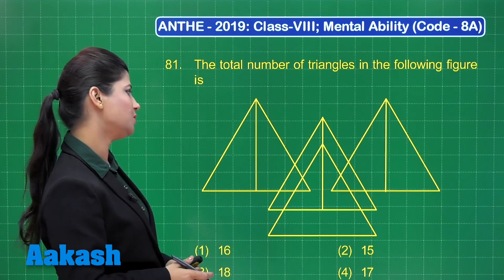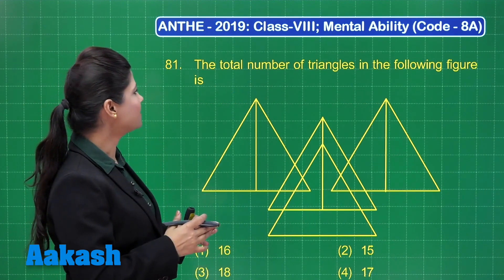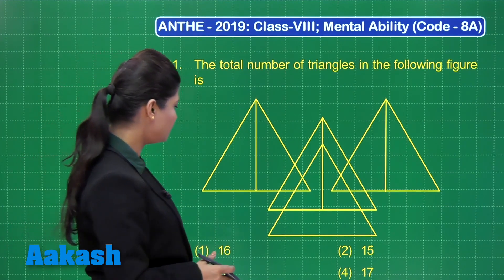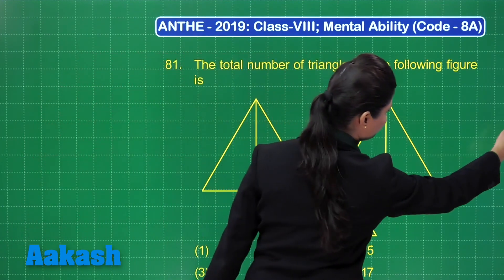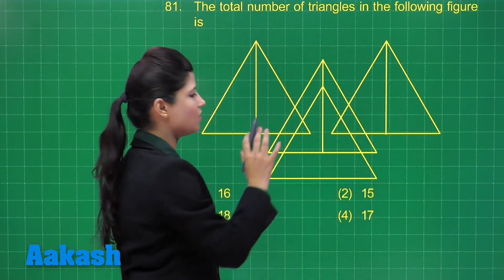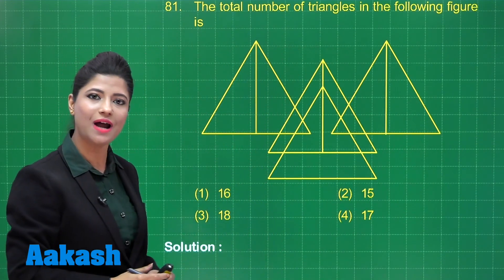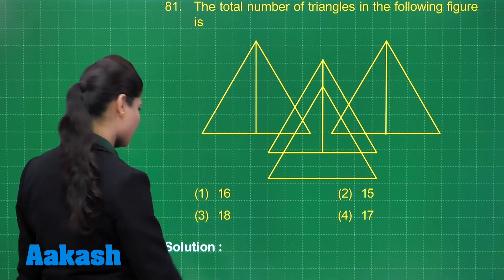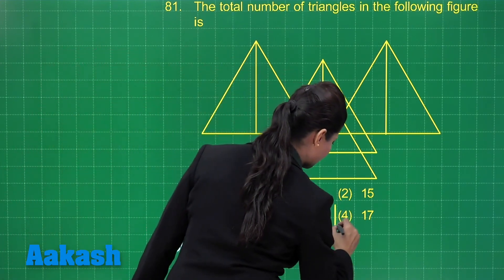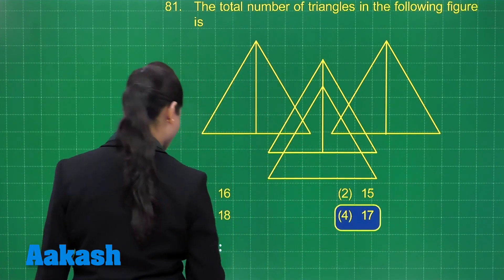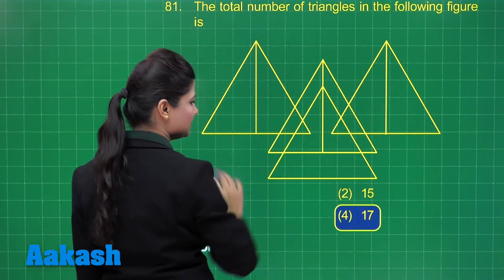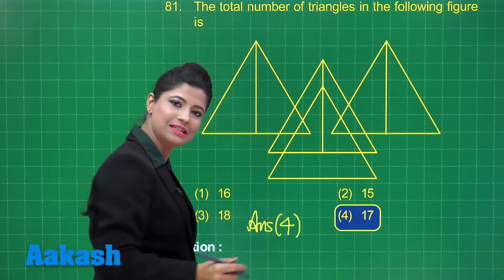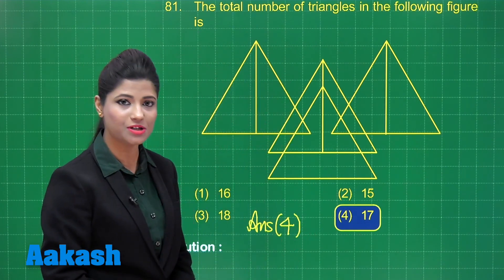Let us take up question number 81. It states: the total number of triangles in the following figure is — out of four options. When you want to solve this question, it is solved by simple counting. Just count the number of triangles and you clearly get the answer. The answer is 17 triangles. You can mark your answer as option 4.